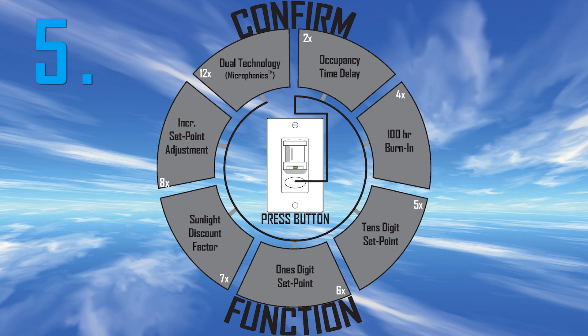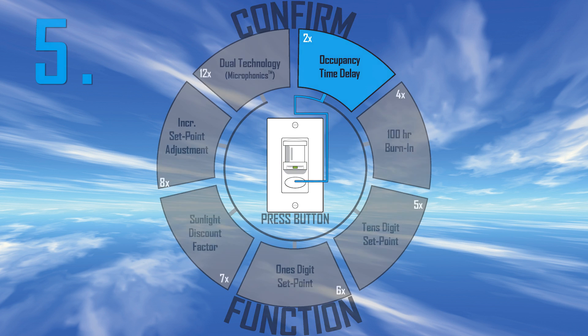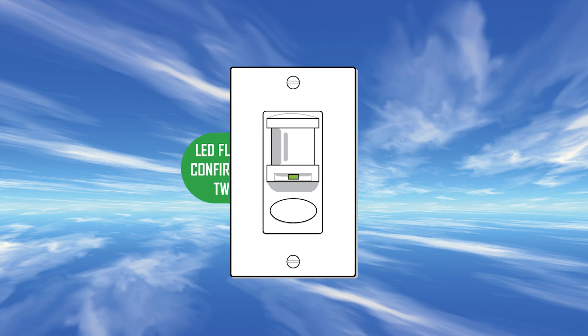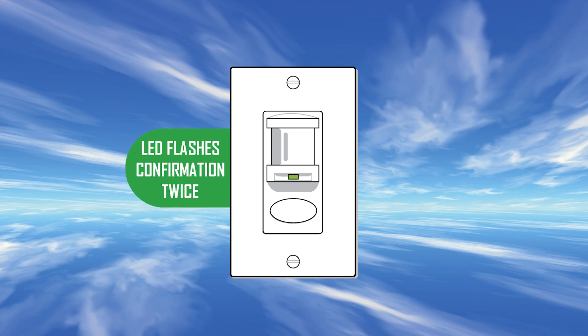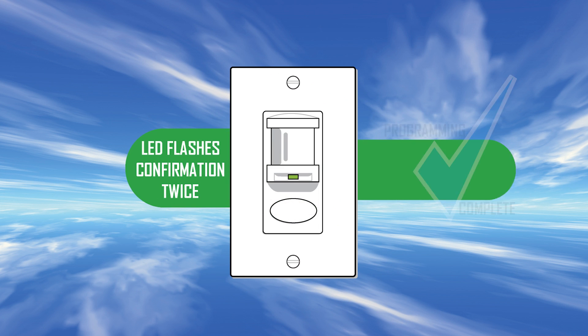Step 5. Re-enter the function number as final confirmation of your changes by pressing the button twice. The LED will blink back twice as a confirmation of your selection.